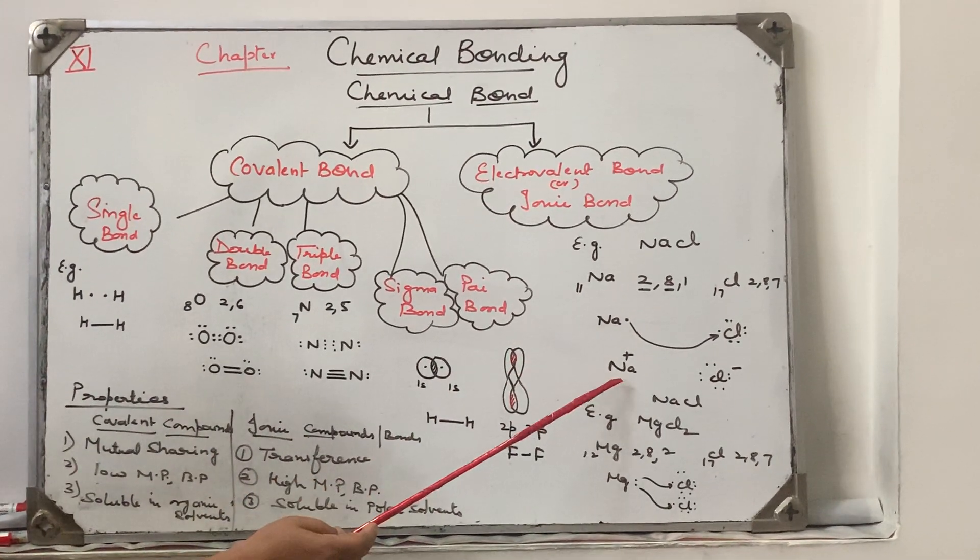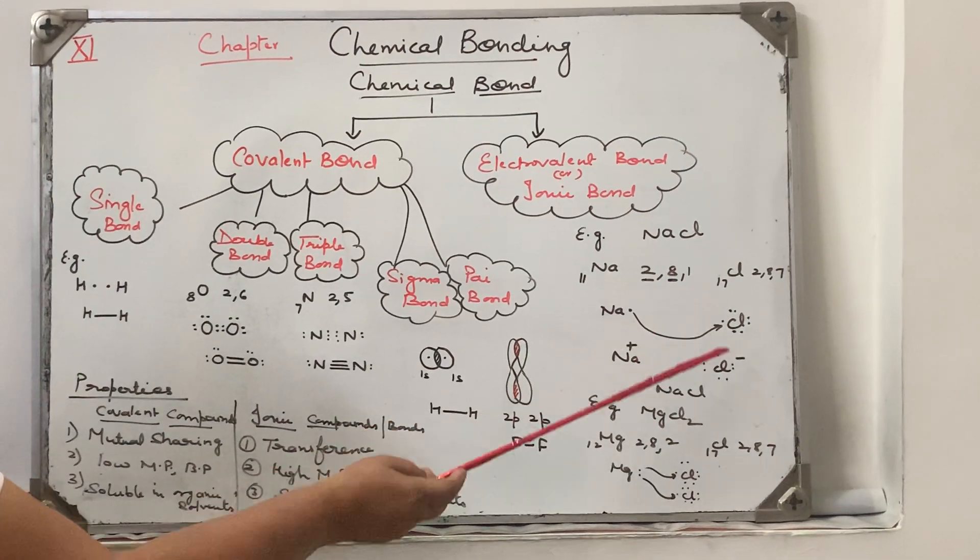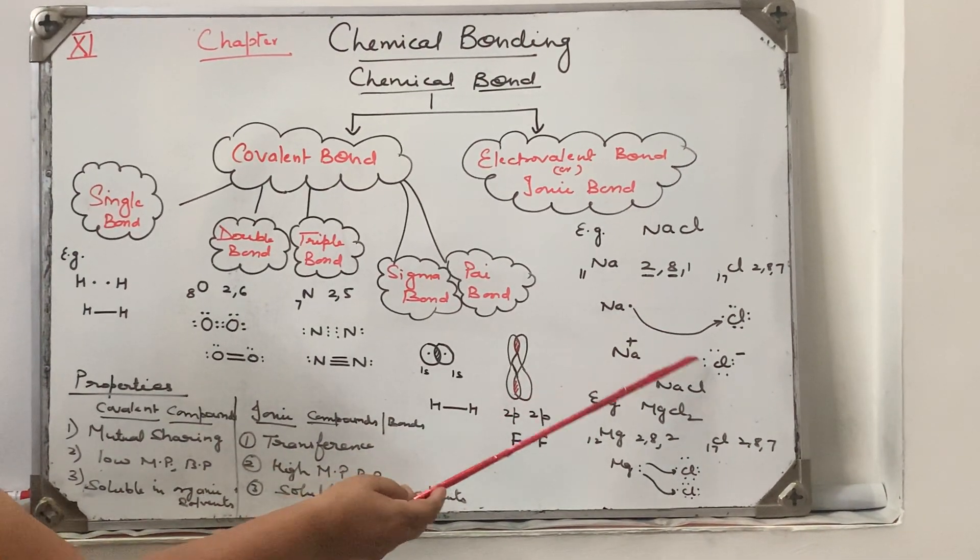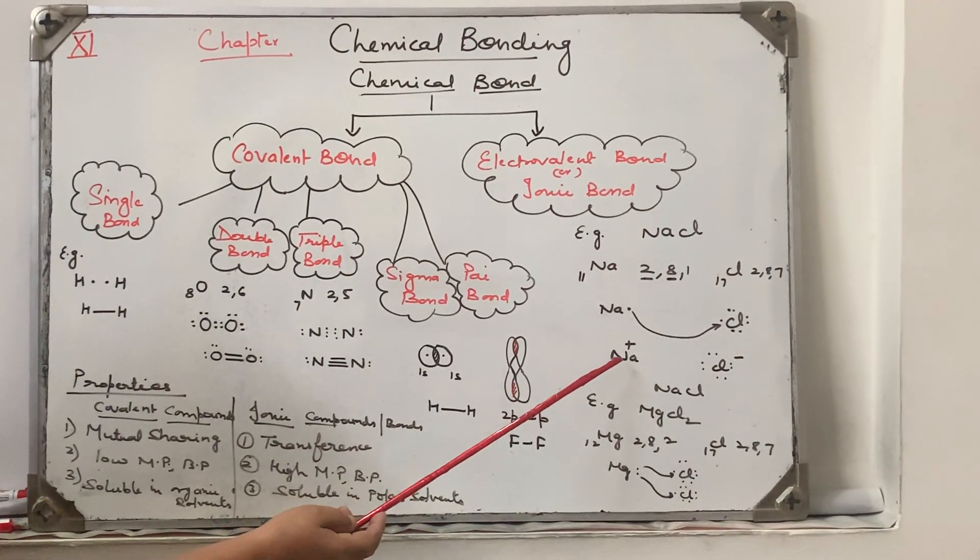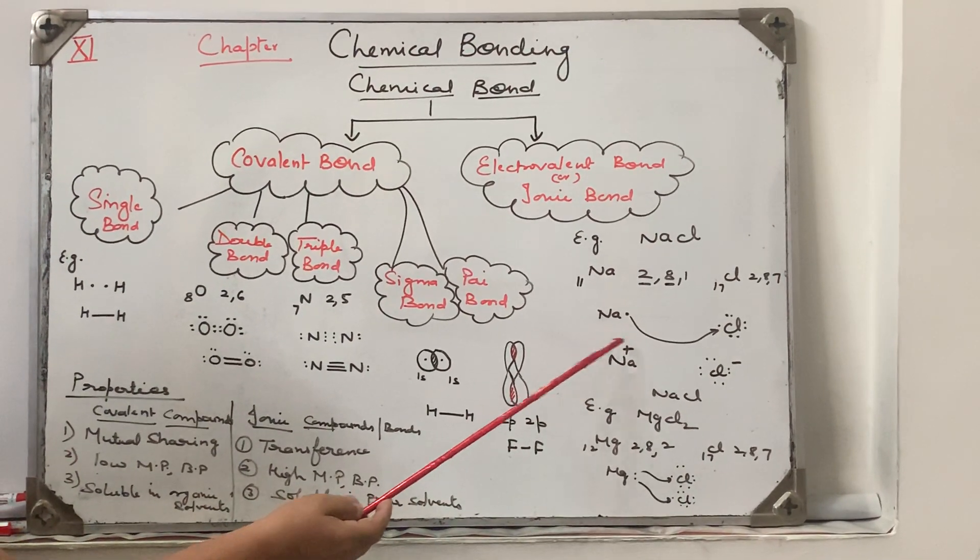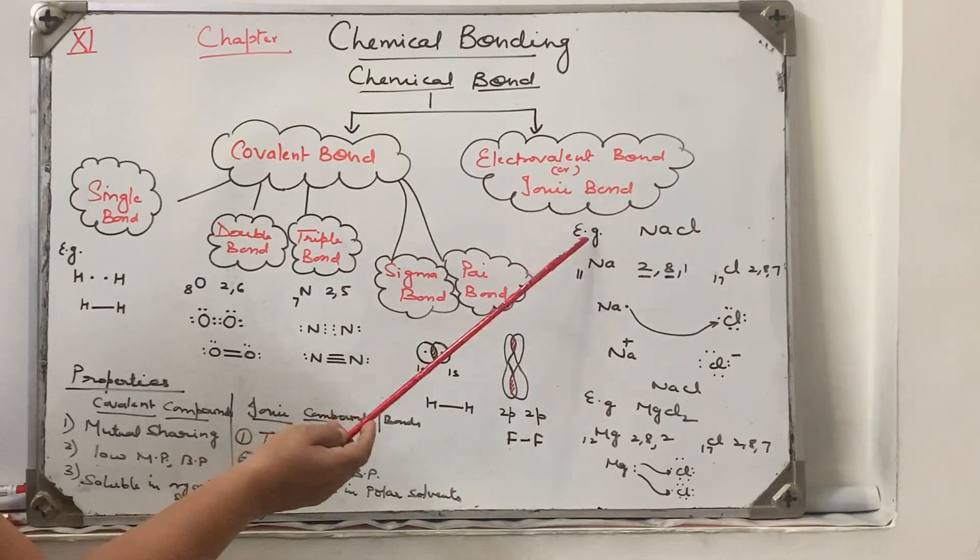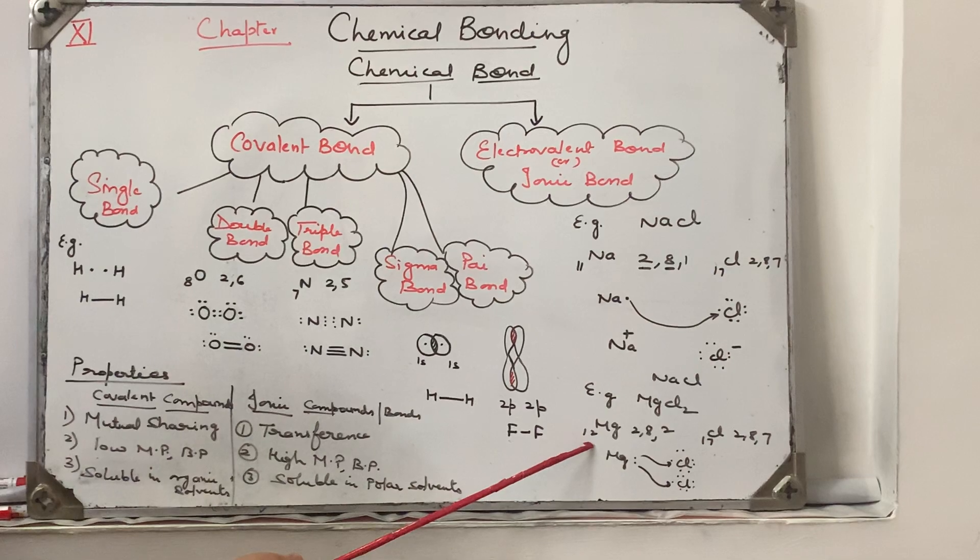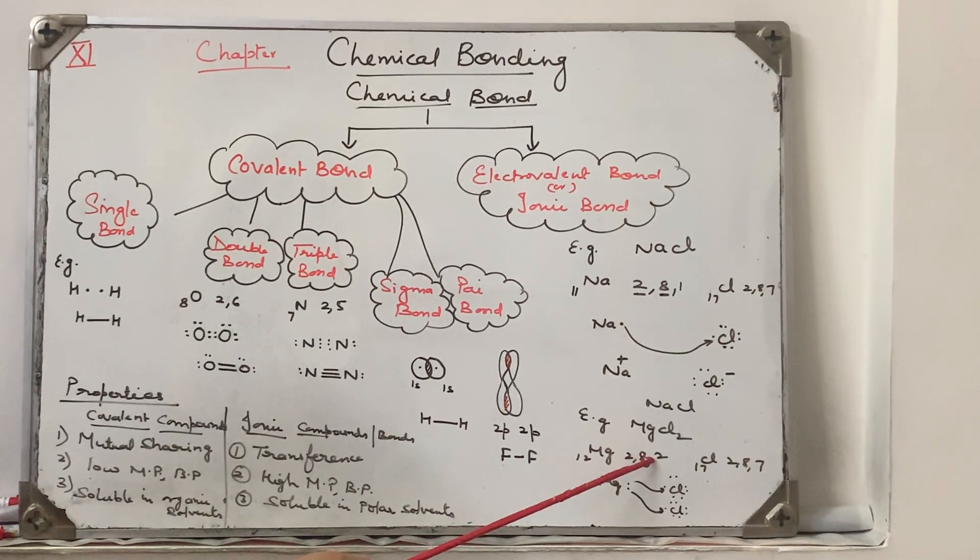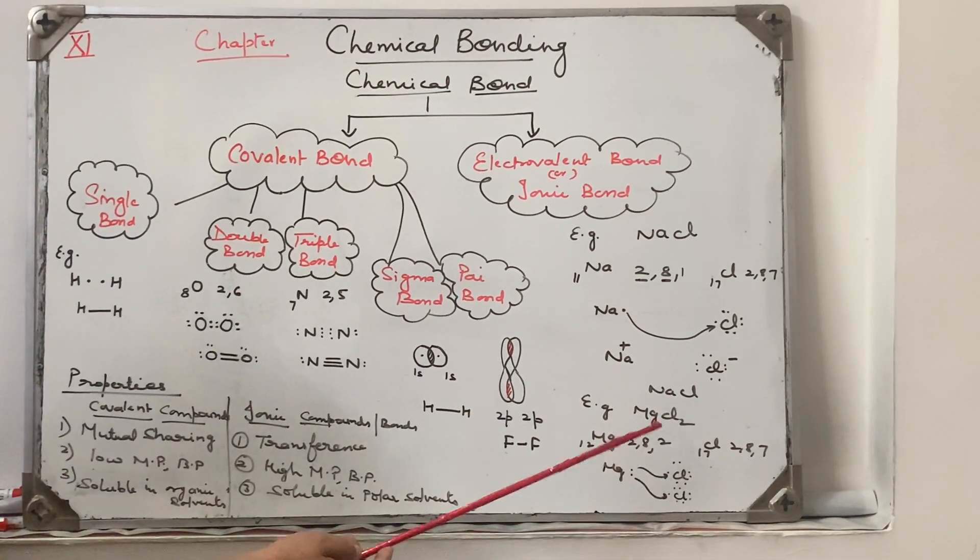As a result of positive negative interaction, the bond will be formed by the attraction. Plus and minus, they will stay together. This is ionic bond or electrovalent bond. Likewise, you can see the example of magnesium chloride. It is in need of two chlorine, that's why the formula is MgCl2.